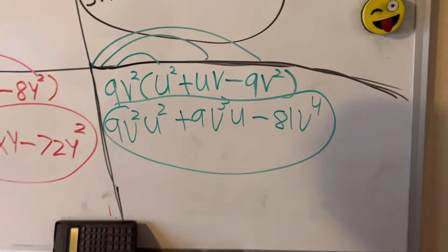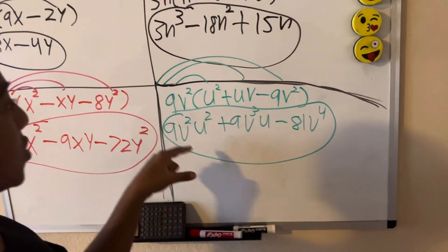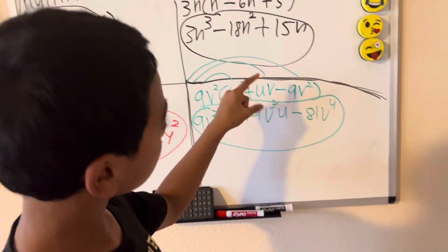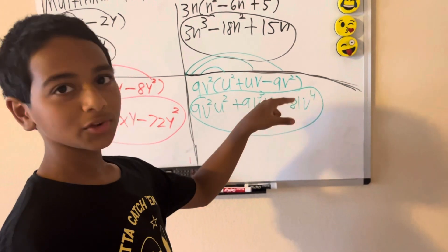So our solution in number 4 is 9v squared u squared plus 9v cubed u minus 81v to the fourth.